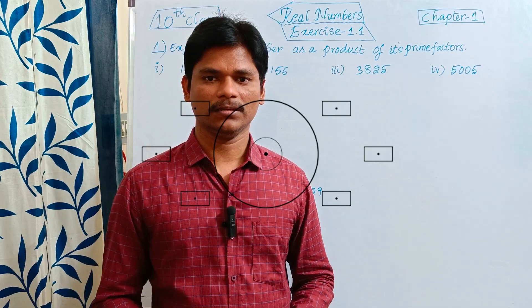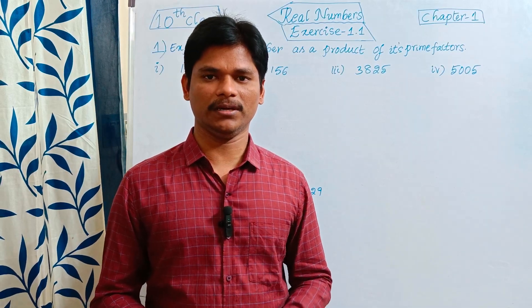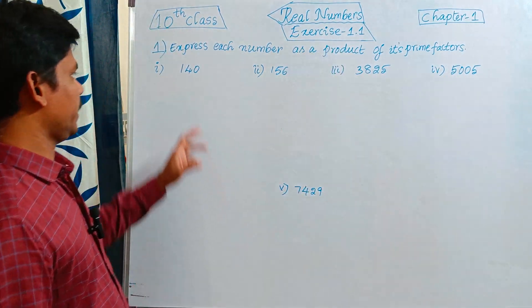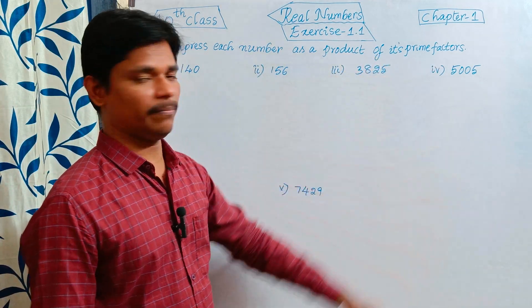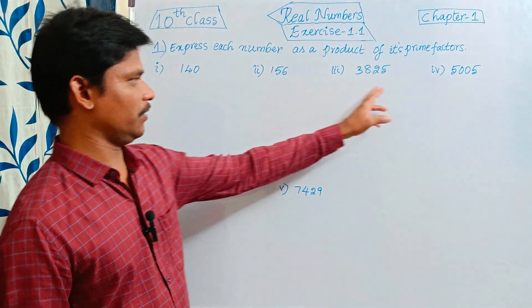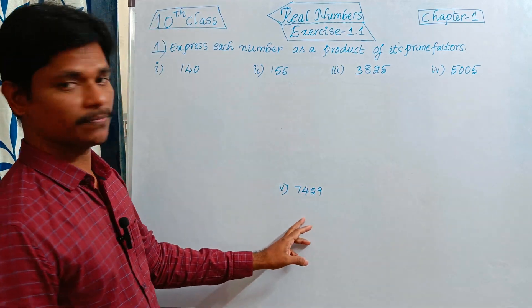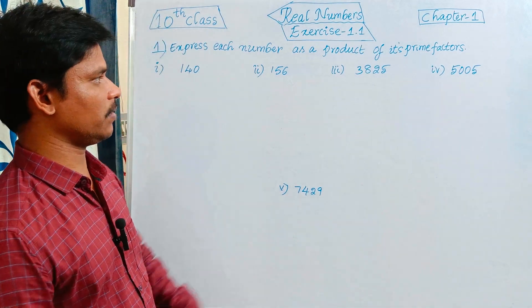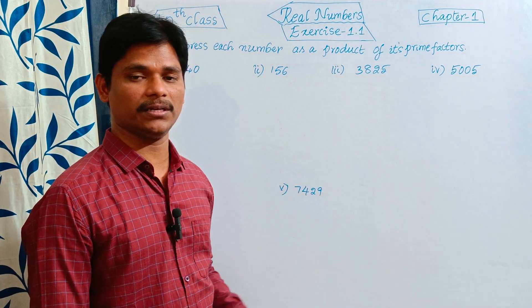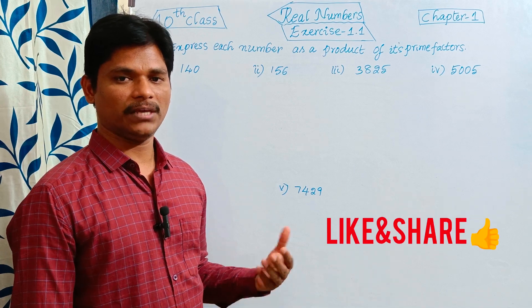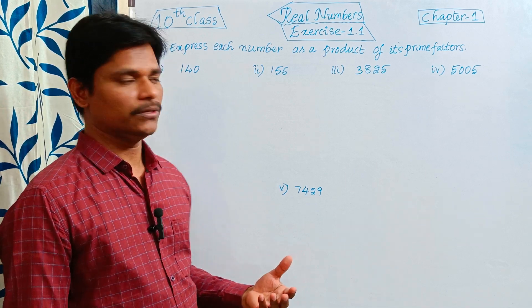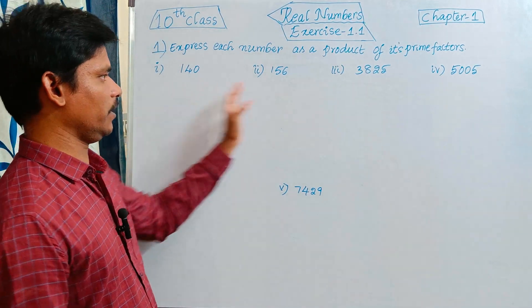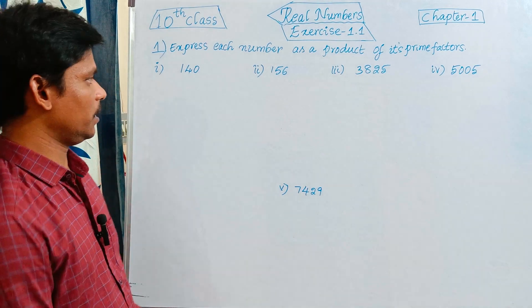In this video we will discuss real numbers, Exercise 1.1. The first question asks us to express each number as a product of its prime factors. There are 5 numbers given. The prime factors are 2, 3, 5, 7, 11, 13, 17, 19, and we have to write the product of prime factors for each of the 5 numbers.